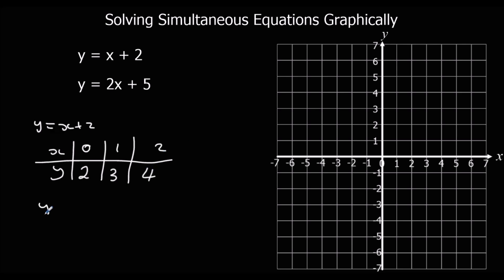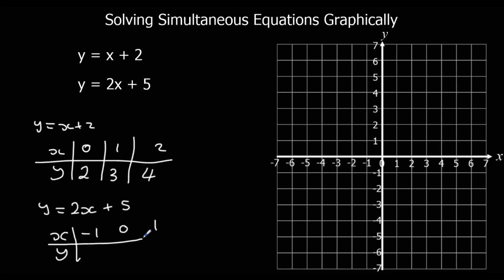So we do the same thing for the second graph — x and y — using minus 1, 0, and 1 this time, because if we did 2 it would take it off the graph, which only goes up to 7. So: 2 times minus 1 plus 5 is 3; 2 times 0 plus 5 is 5; and 2 times 1 plus 5 is 7.